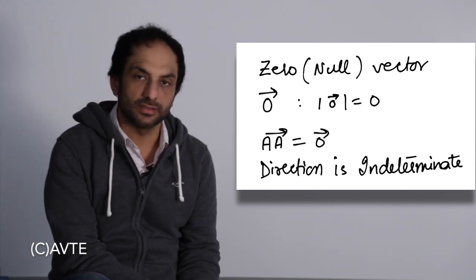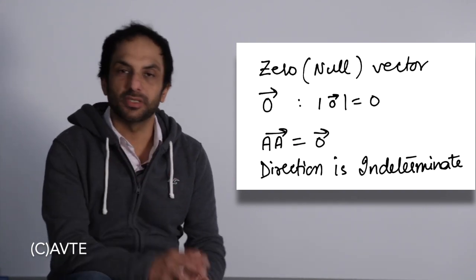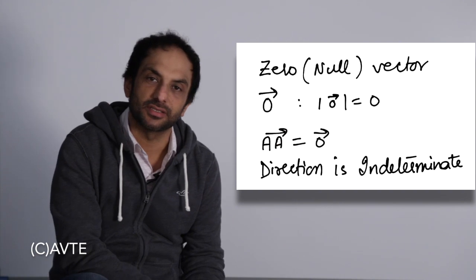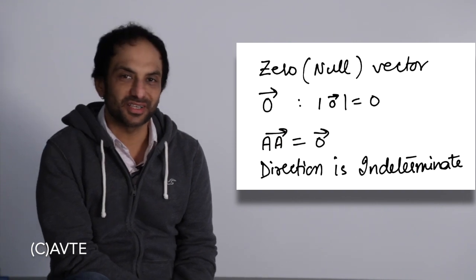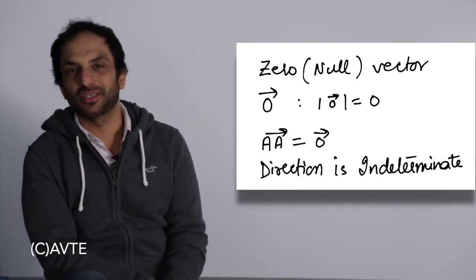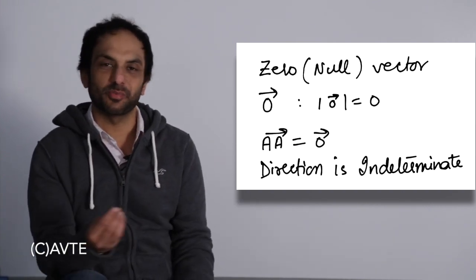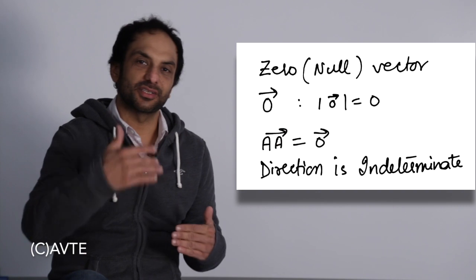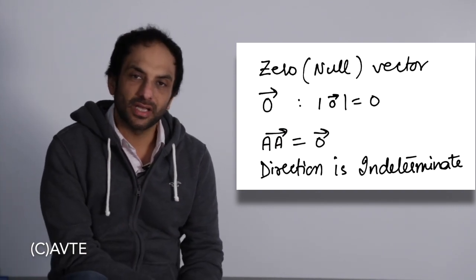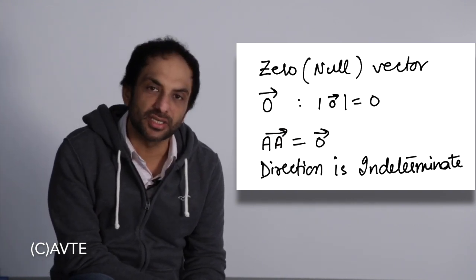The first is the zero vector. The vector whose magnitude is zero is called a zero vector. Its symbol is O with an arrow on it. The zero vector is also known as the null vector. The characteristic of a null vector is that its initial point coincides with its terminal point — they are the same. Therefore there is no distance, because the magnitude or displacement will be zero.